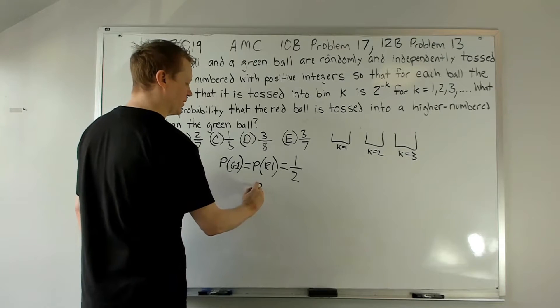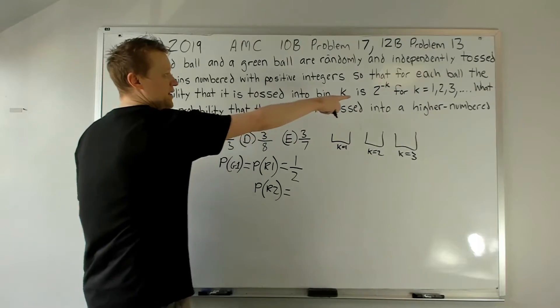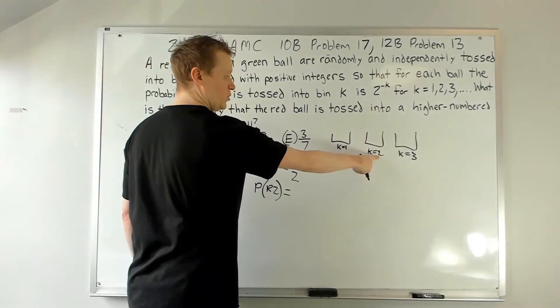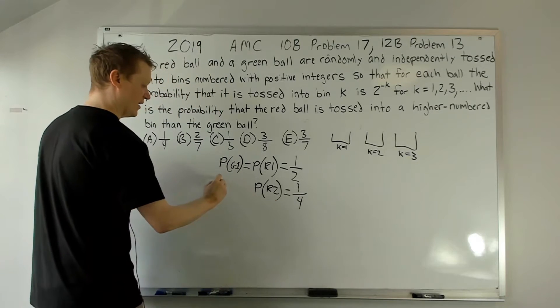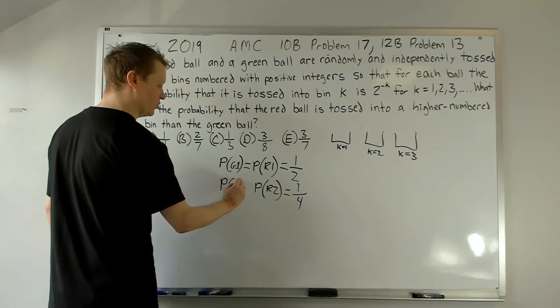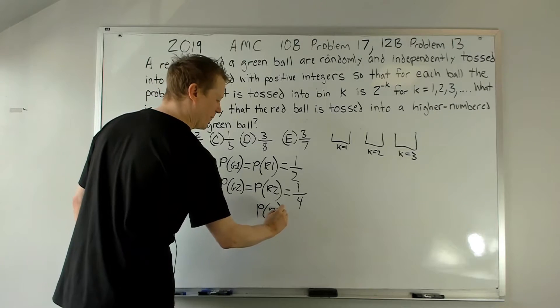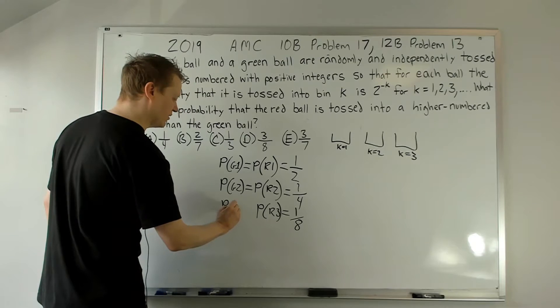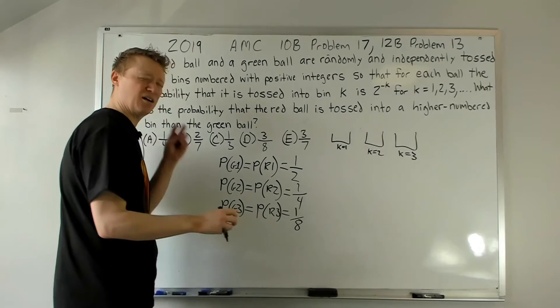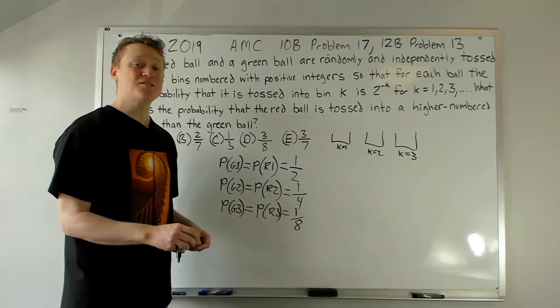So what about the probability of the red ball going in bin 2? Well, then that's 2 to the negative 2 when k is 2, so that's going to be 1 fourth, and obviously green 2 will be the same thing. We could do one more of these - we don't absolutely have to - but it's going to be 1 eighth, and the probability of the green ball in bin 3 is also 1 eighth.